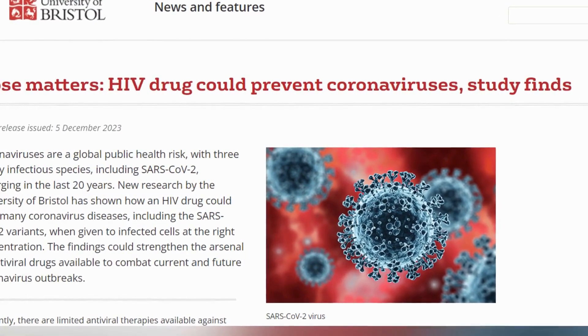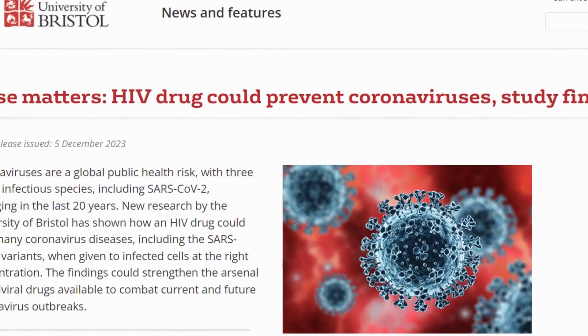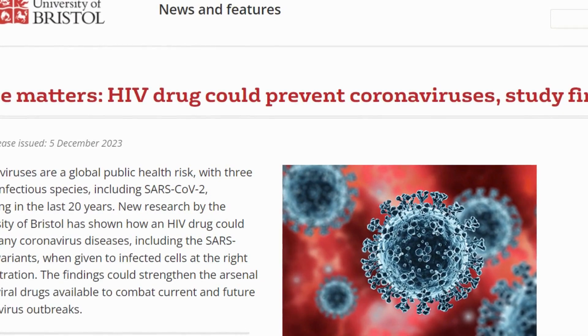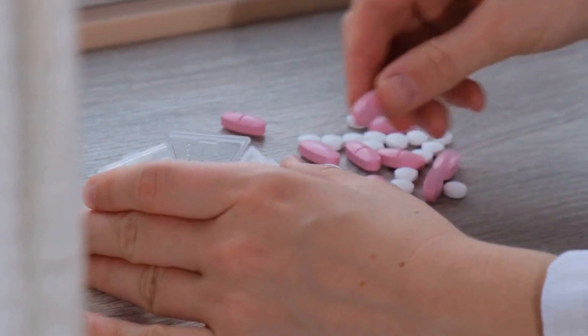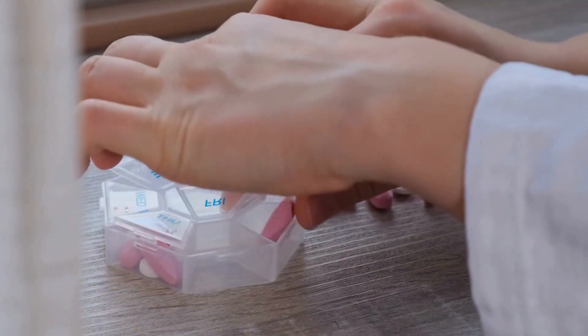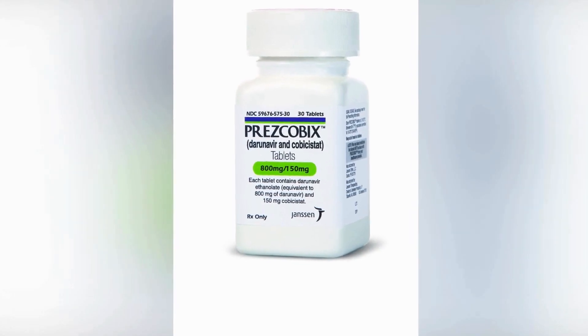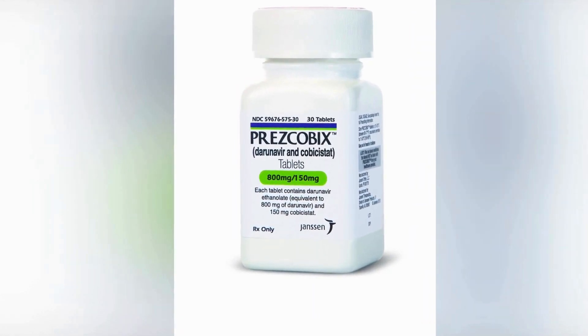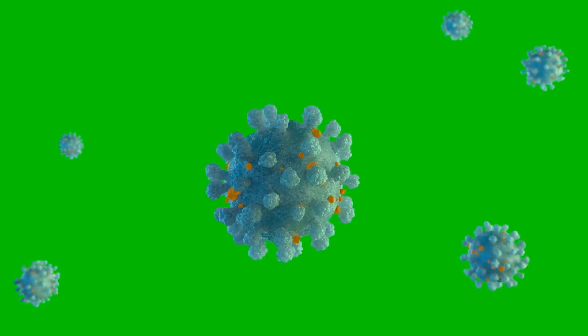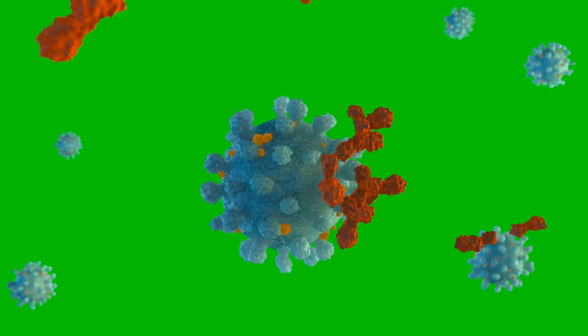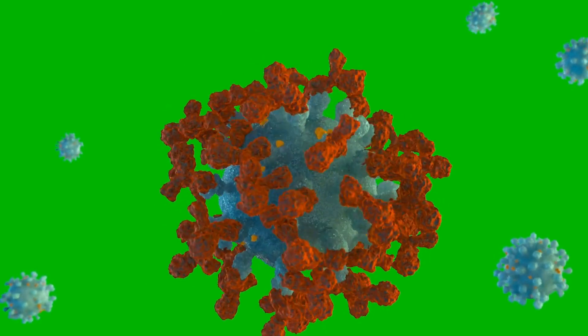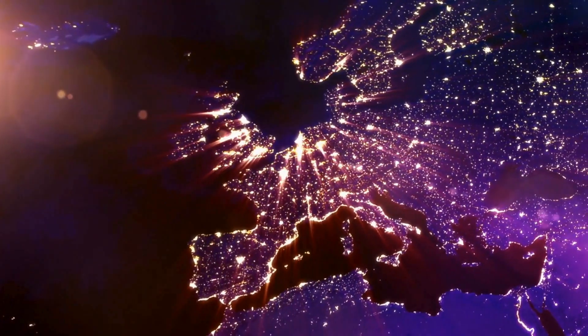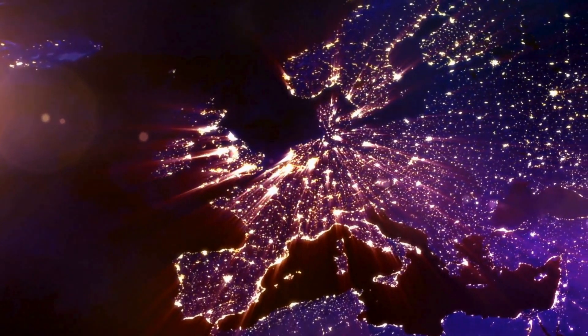Published in the journal Antiviral Research on December 5th, the findings shed light on the drug's ability to potentially expand the repertoire of medications available to tackle existing and future coronavirus outbreaks. The study builds on previous research indicating that the booster drug cobicistat, known for enhancing the effect of anti-HIV drugs, exhibited antiviral properties against the SARS-CoV-2 variant prevalent in Europe in early 2020.